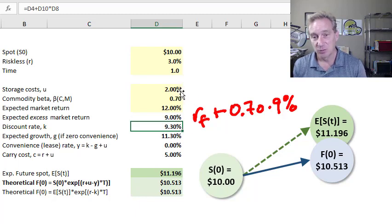However, it costs 2% to store the commodity. And so in order to realize the discount rate of 9.3%, the commodity spot price needs to grow by 11.3%. Because we can think of the storage cost as a drag on that. A growth rate of 11.3% implies that an expected future spot price of $11.20.